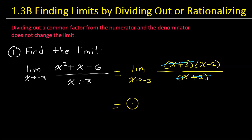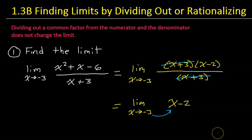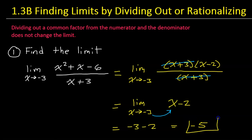This equals the limit as x approaches negative 3 of x minus 2 — no more denominator. Now there's nothing stopping us from evaluating the limit by direct substitution. Substituting negative 3 in for x gives us negative 3 minus 2, which is negative 5. So the limit of this function as x approaches negative 3 is negative 5.